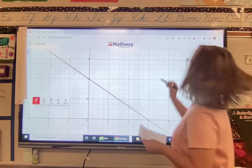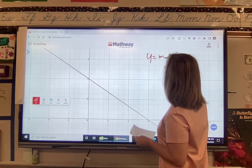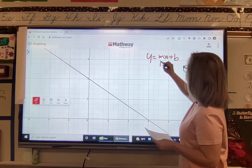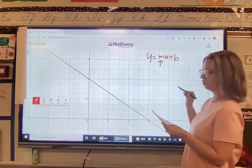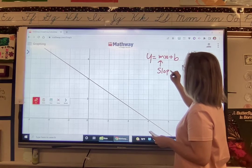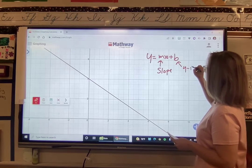So I'm going to start off with the equation, which is y equals mx plus b. m right here represents the slope, and b represents the y-intercept.